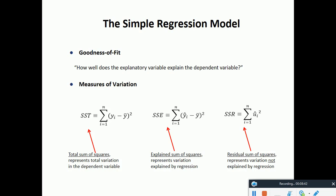Sum of square total is basically the total variation in the dependent variable — the total variation of yi from the average mean value. We always subtract the average mean. We square it because for some people the difference would be negative, but we always want to measure variation in terms of a positive value. That's why we square the term.